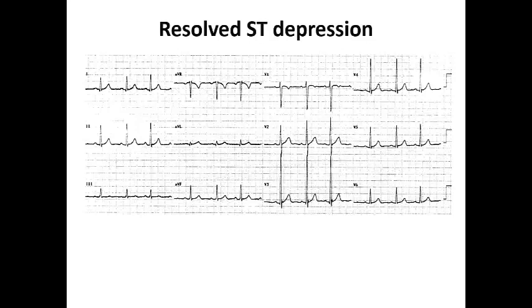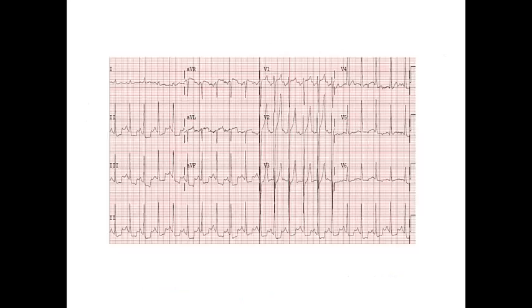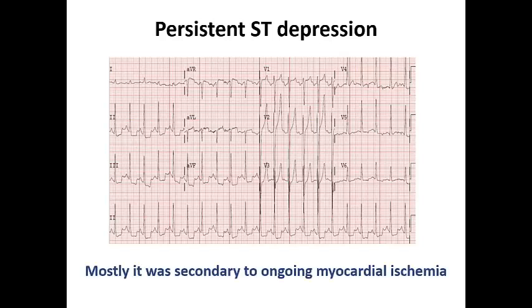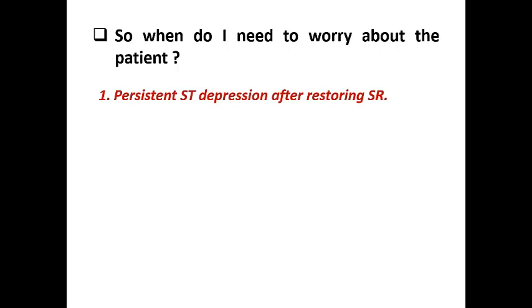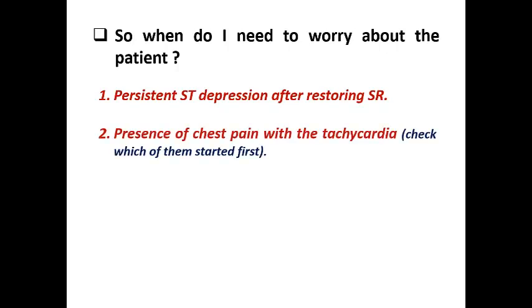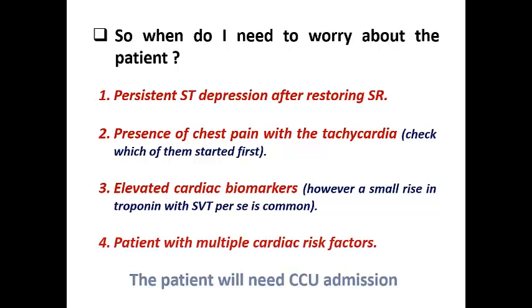The 2019 ACC guidelines for chronic coronary syndrome emphasize that ST segment alteration during SVT should not routinely be used as evidence of coronary artery disease. If the ECG shows resolved ST depression after restoration of sinus rhythm, it was mostly secondary to orthodromic AVRT — possibly repolarization abnormality. But if the patient has persistent ST depression after restoring sinus rhythm, it may indicate ongoing myocardial ischemia. Concerning features include: persistent ST depression after sinus rhythm restoration, chest pain during tachycardia, significantly elevated cardiac markers, and multiple cardiac risk factors — these patients may need CCU monitoring.